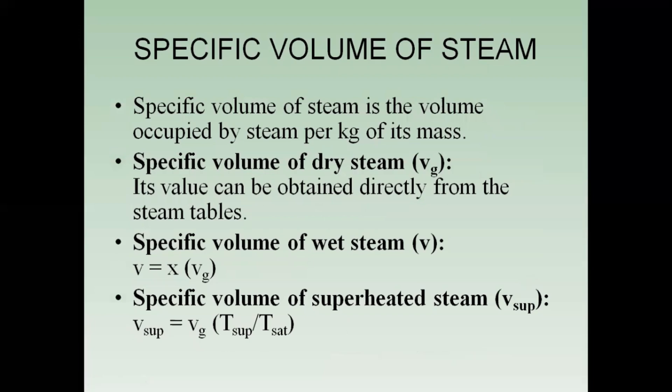The specific volume of steam is the volume occupied by steam per kilogram of its mass. The specific volume of dry steam can be directly found from the steam tables by putting the value of temperature or pressure.